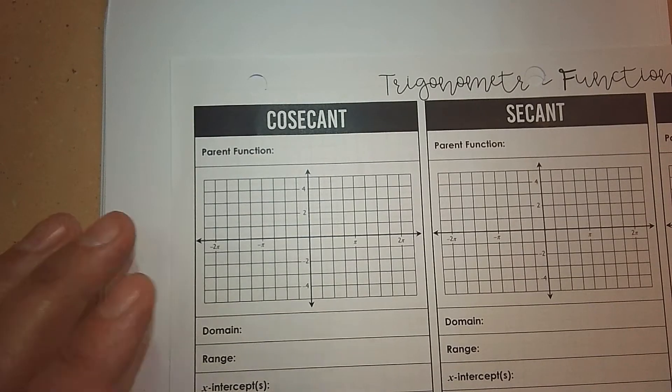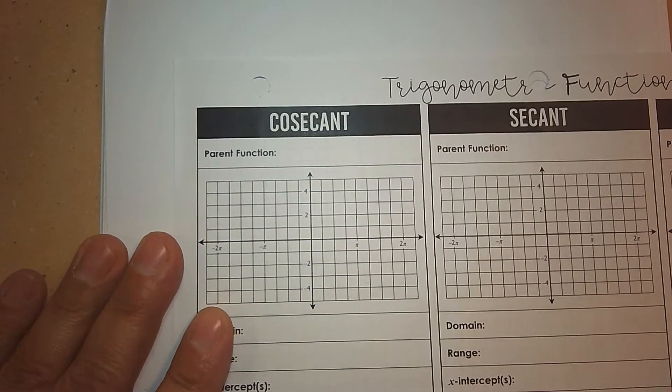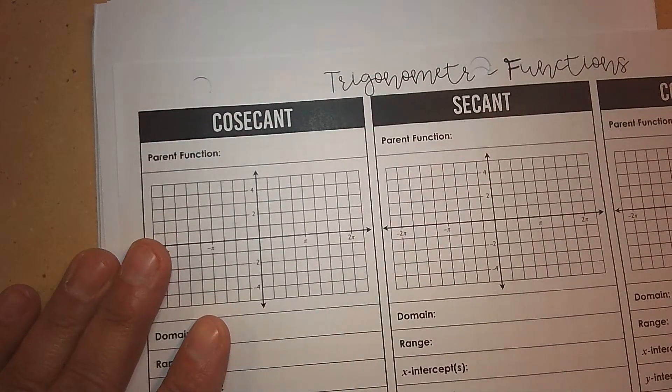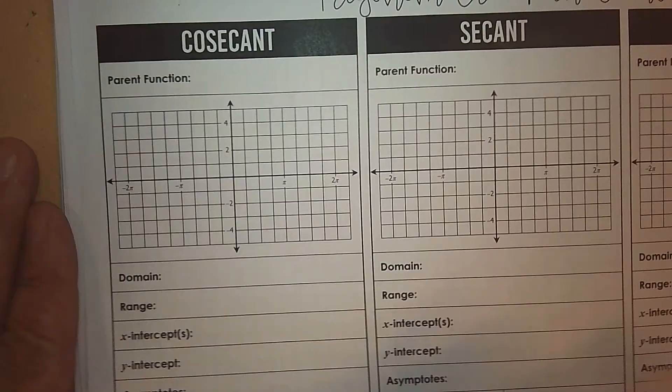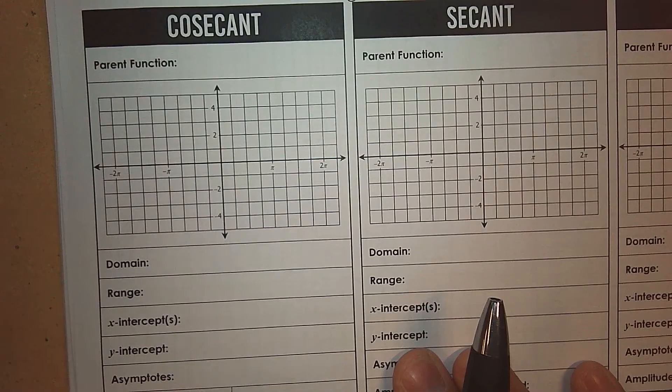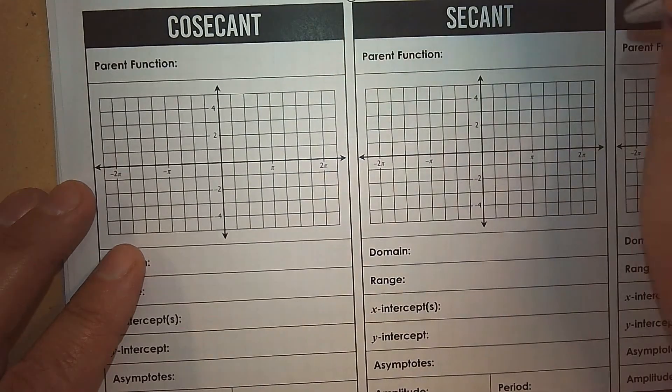All right, so this video is graphing the reciprocals, just the parent with no transformations or anything. Just what does it look like? What's the parent? What are you looking for? So that when we have the other homework video where there's transformations, you can handle it.